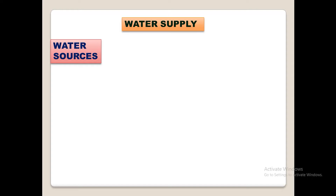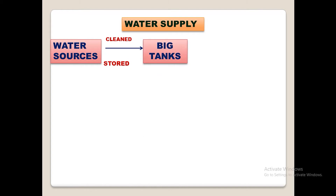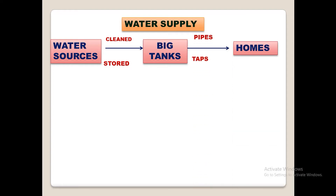Water from sources like rivers and lakes is cleaned and stored in big tanks. From these big tanks, water comes to our homes with the help of pipes and taps.